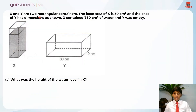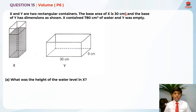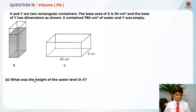Question 15 is testing us on volume. X and Y are two rectangular containers. The base area of X is 30 cm squared and the base area of Y has dimensions as shown. X contains 780 cm³ of water and Y was empty. Part A: what was the height of water level in X?